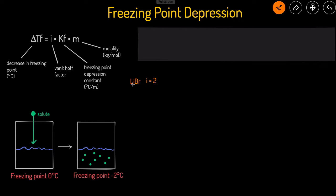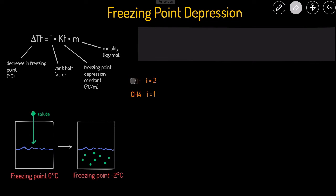But if you're working with a molecular compound, such as CH4, we know this molecular compound does not break up into ions. When it dissolves, it just stays as CH4. So its i value will just be one. That's what the Van't Hoff factor is.